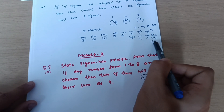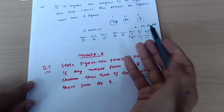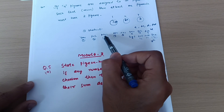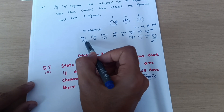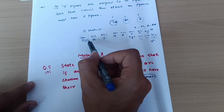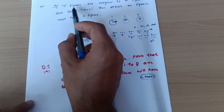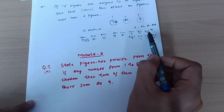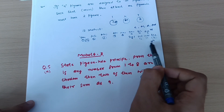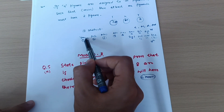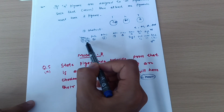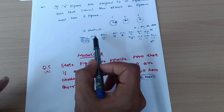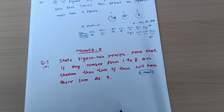Now the 13th student must be assigned to one of these 12 months — either January, February, March, and so on. So I assign the 13th student to one of those months. According to the principle, I am assigning 13 students to 12 months, so at least one pigeonhole must have two pigeons. That means one month must have at least two students with birthdays in it. Hope it is clear.